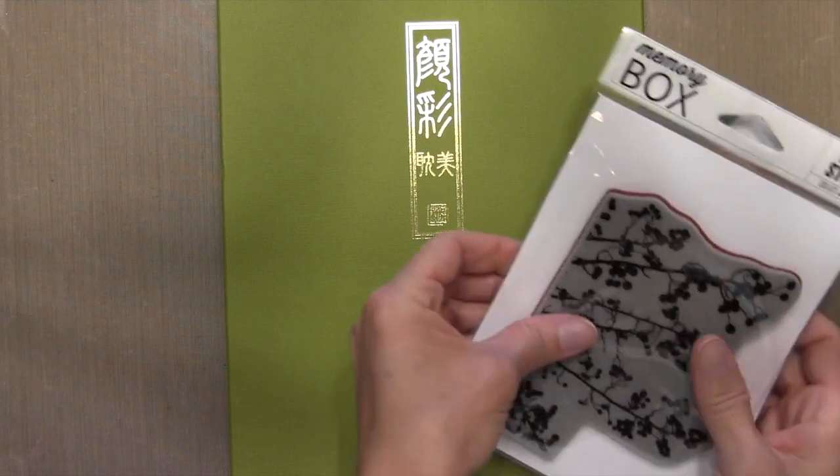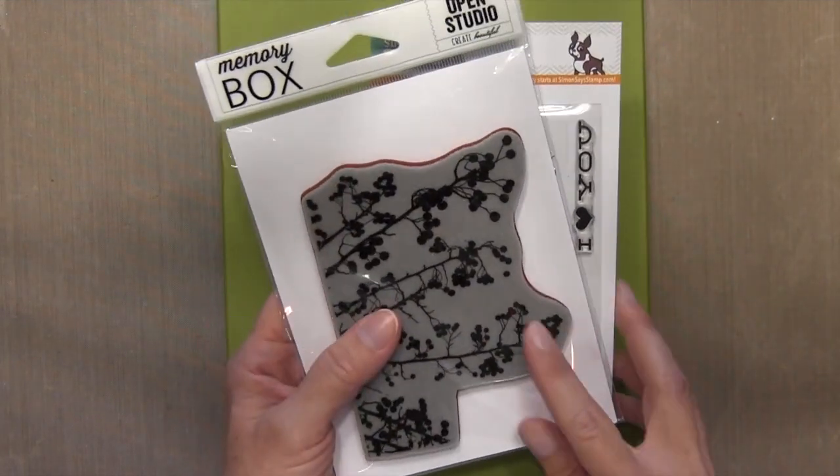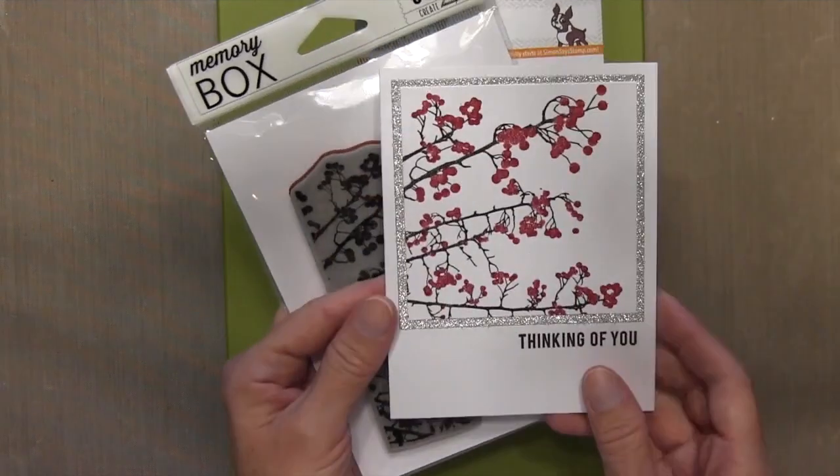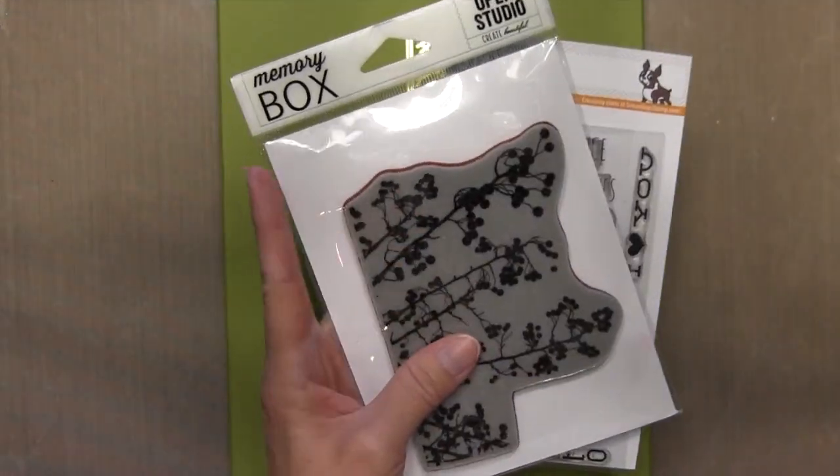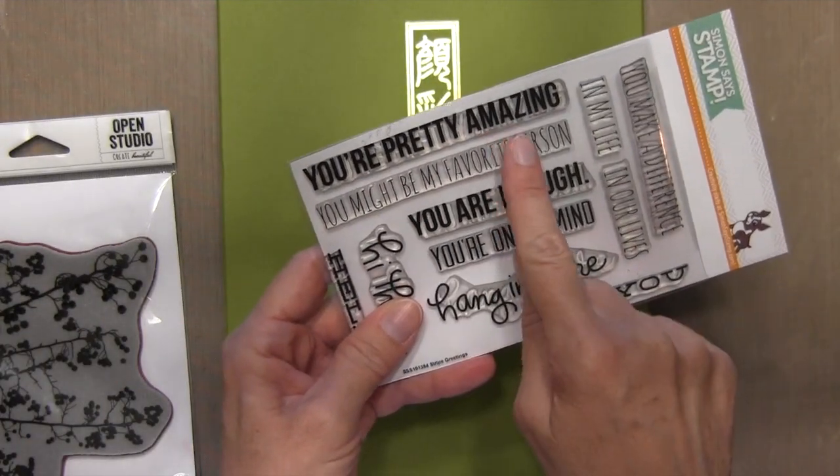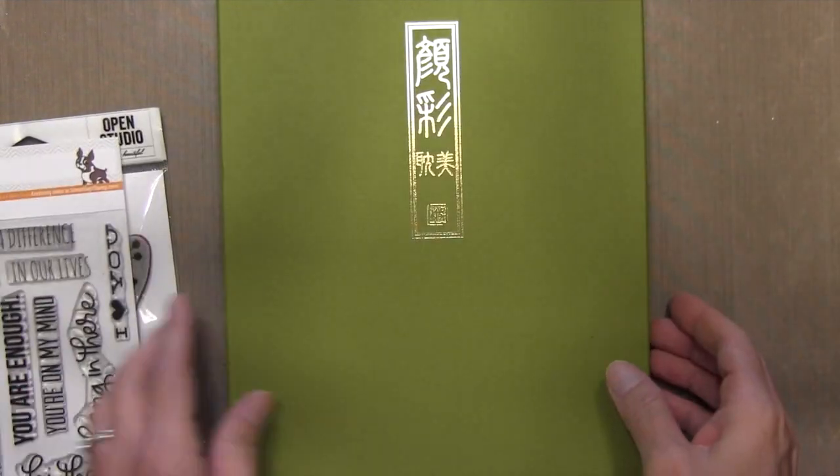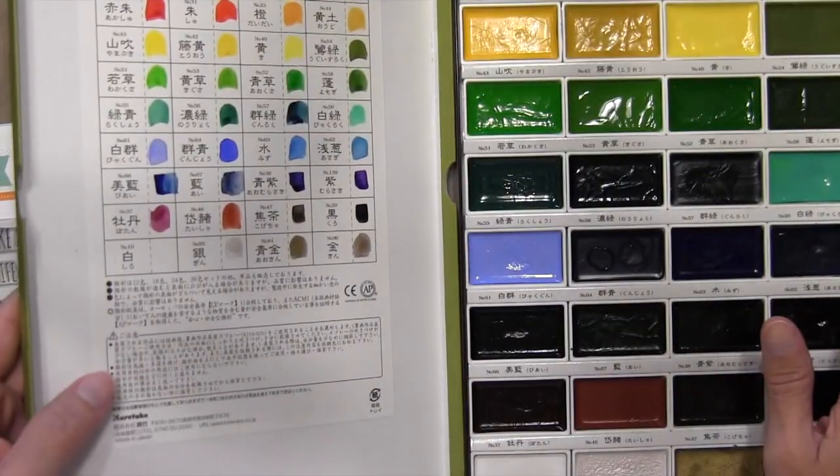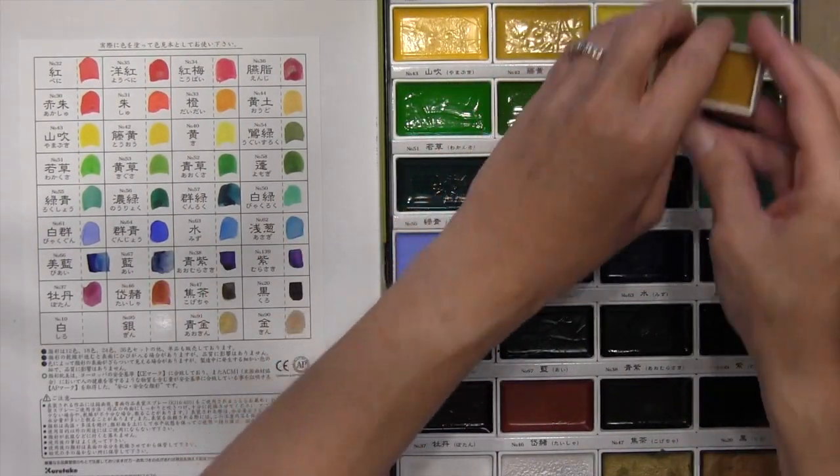Today's card uses the Valley Berries Stamp by Memory Box. I did another card on this a couple of weeks ago. I colored it with some Stampin' Up! markers and I stamped it down. And then I'm also going to be using the Stripe Greetings set by Simon Says Stamp. I love this set. It's got a lot of really nice, interesting, different sentiments in it. And I'll be coloring with my Gansai Tombi watercolors. So I'm going to go ahead and pull out my palettes right now and get them ready.